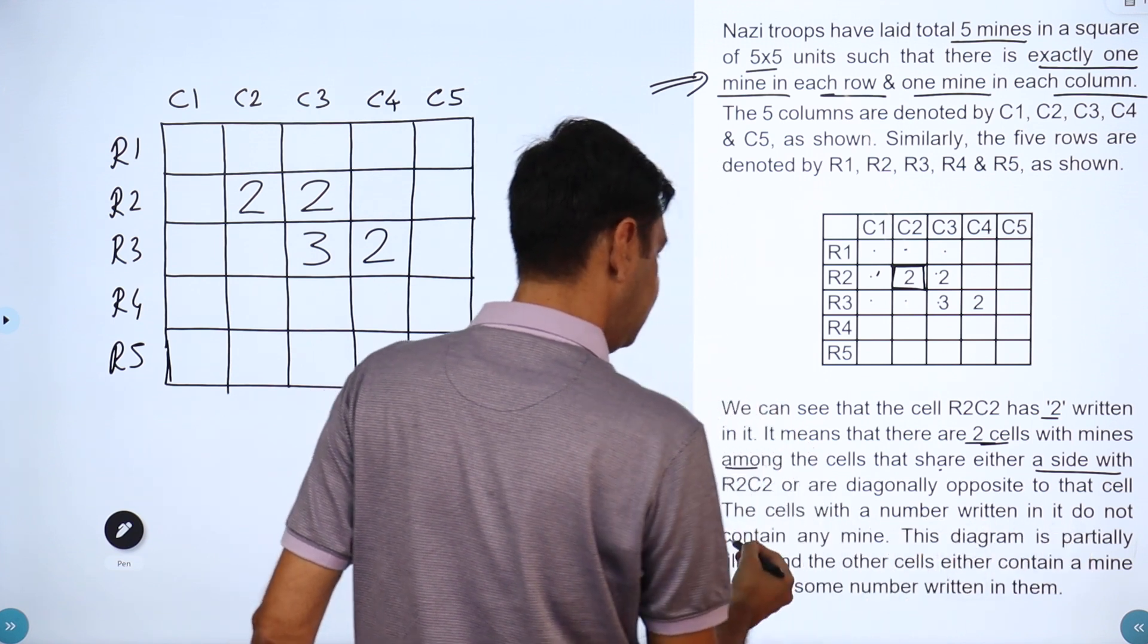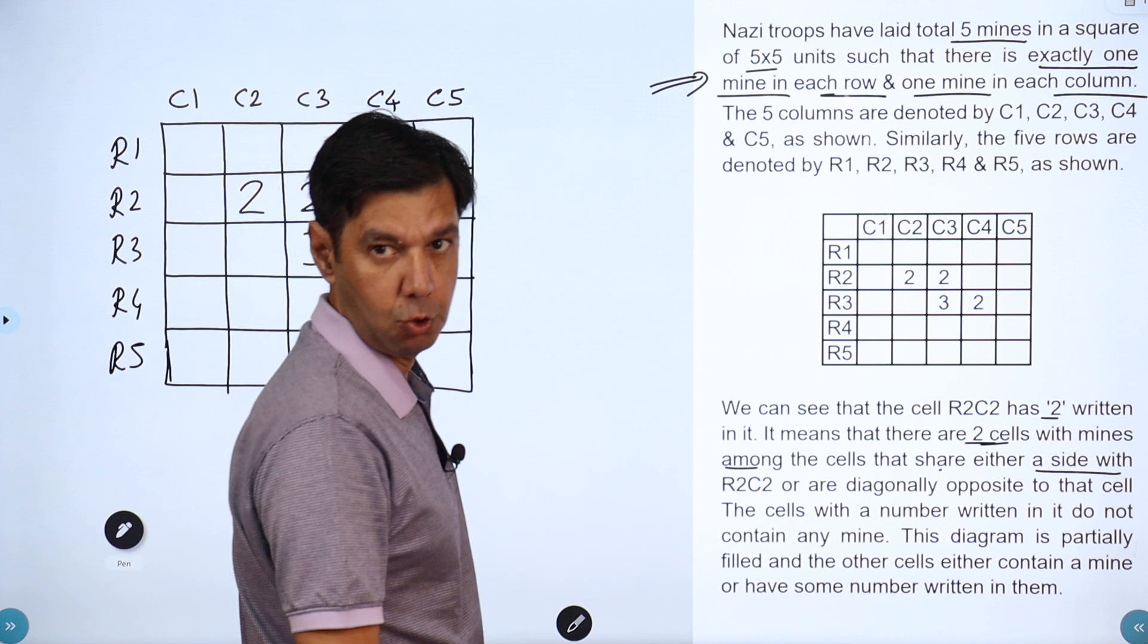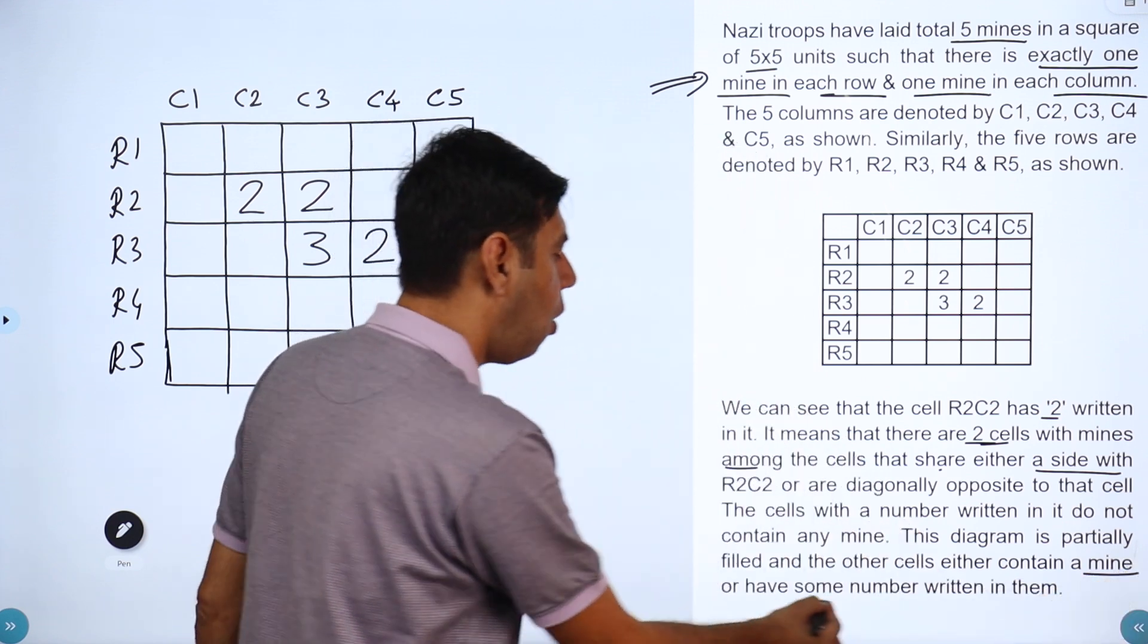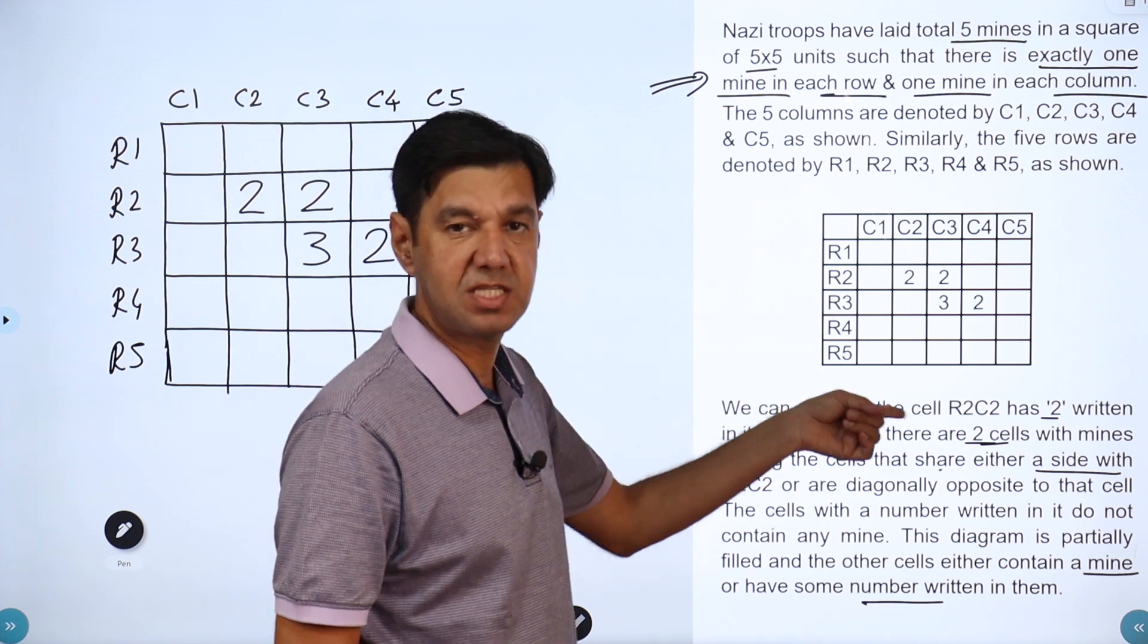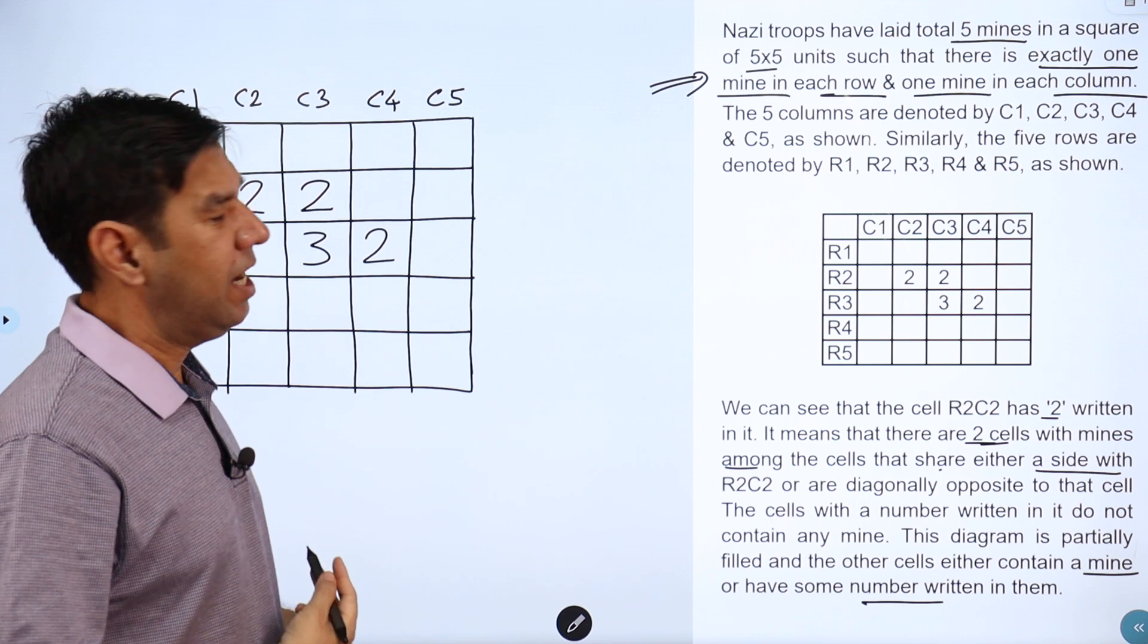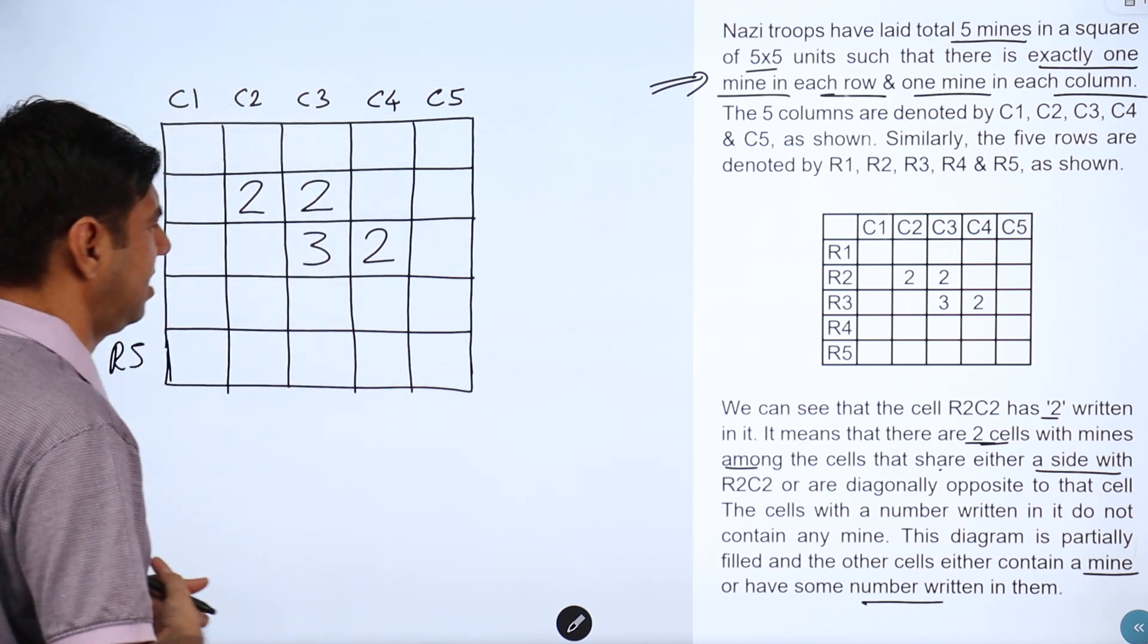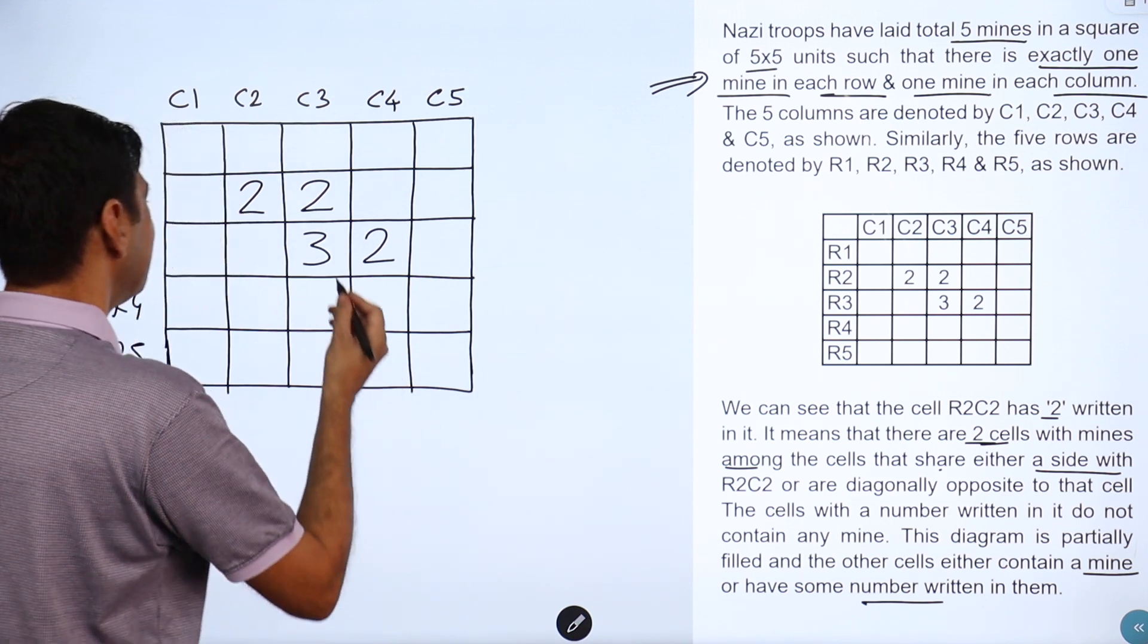The cells with the number written in them do not contain a mine. This diagram is partially filled and other cells either contain a mine or contain a number. If there's a number there's no mine, and the number denotes the number of mines in the adjacent cells. It seems scary only if you're a very beginner. Otherwise it's very straightforward and it will get over even before I start.